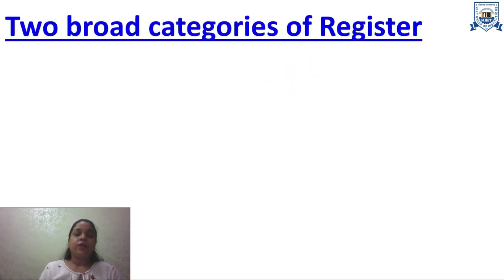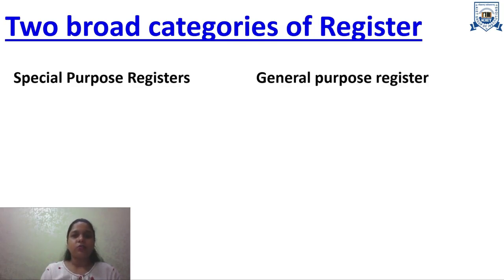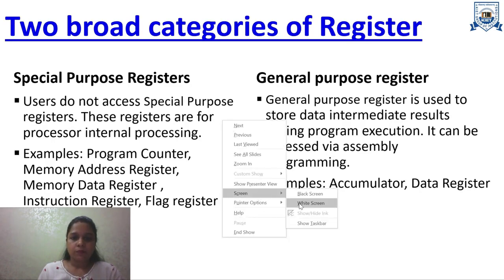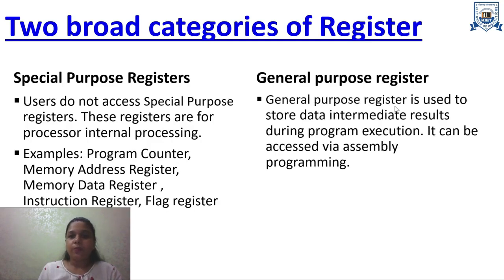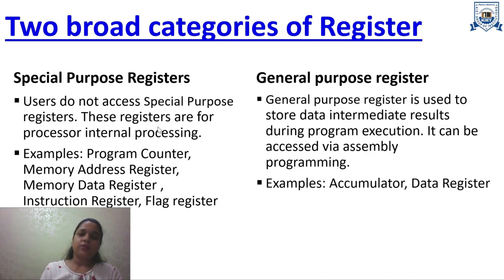There are two broad categories of registers. One is special purpose registers and the second is general purpose registers. Special purpose registers are not accessible by the user — they are for internal processing. General purpose registers are used to store data and intermediate results during program execution, and they can be accessed via assembly language. Examples of general purpose registers include the accumulator and data register.